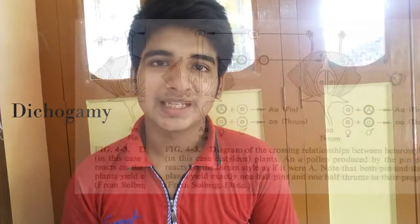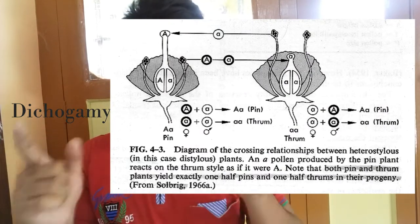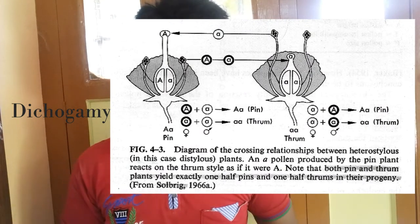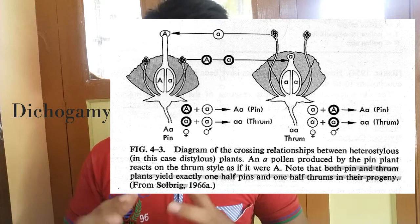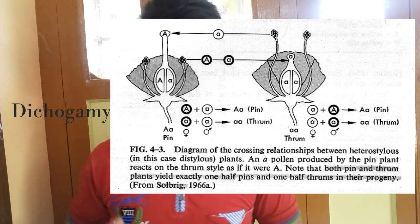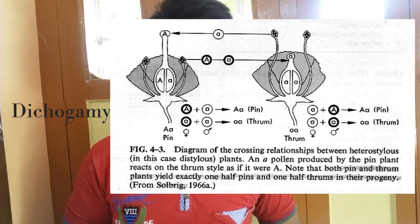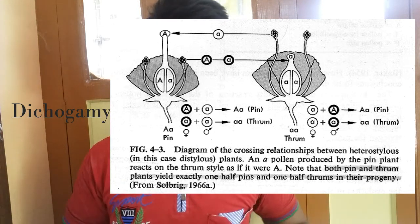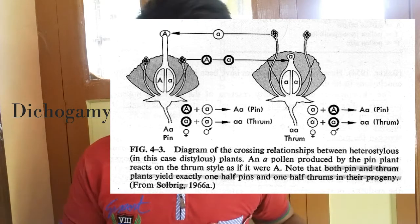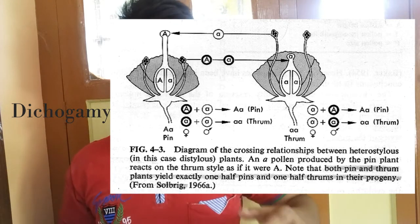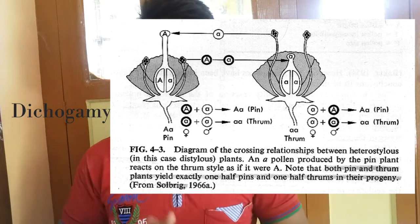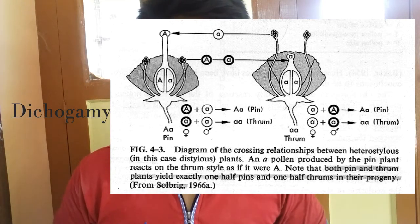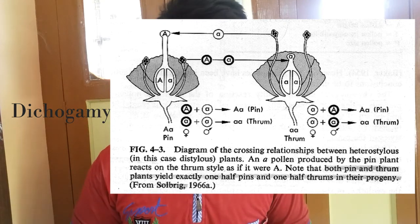The second outbreeding device is dichogamy. You can see the picture on the screen — there are two flowers shown. In one case, the pollen area is matured but the ovary area is not matured yet. In another case, the ovary area is matured but the pollen area is not matured yet. So the matured ovary and the matured pollen connect to each other, and cross-pollination happens.